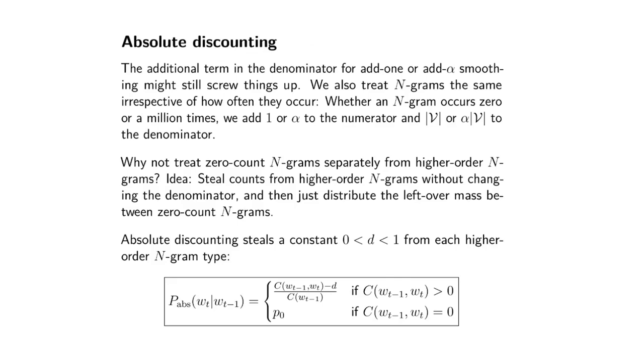This might still be a bit too blunt. Can we do something more sensible where we explicitly steal from the rich, gather the mass we've stolen, and spread that out evenly to the poor?